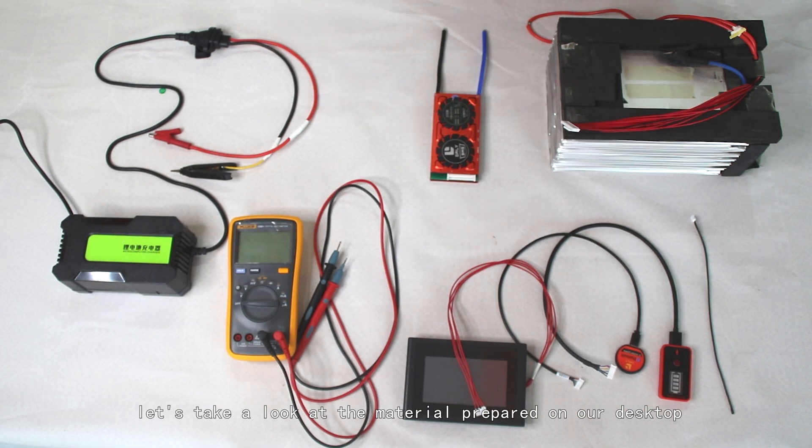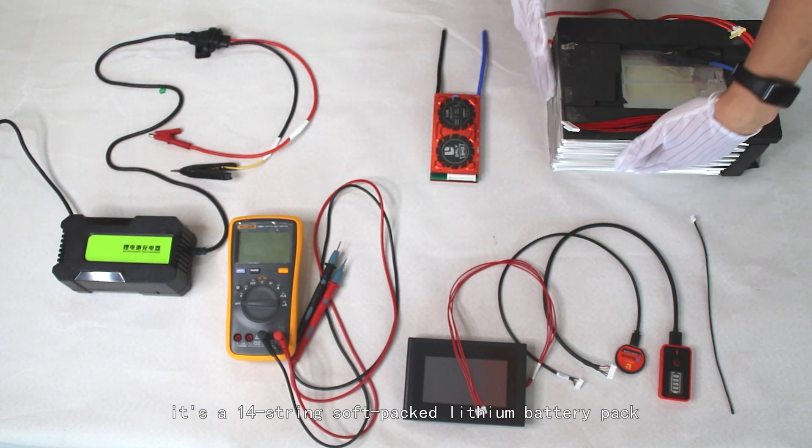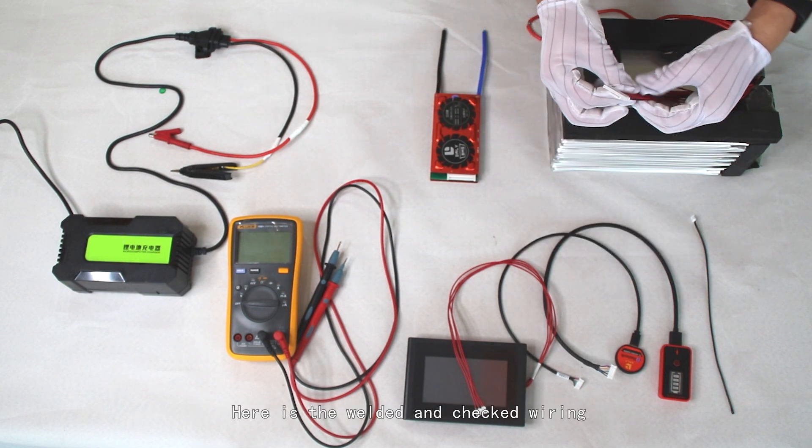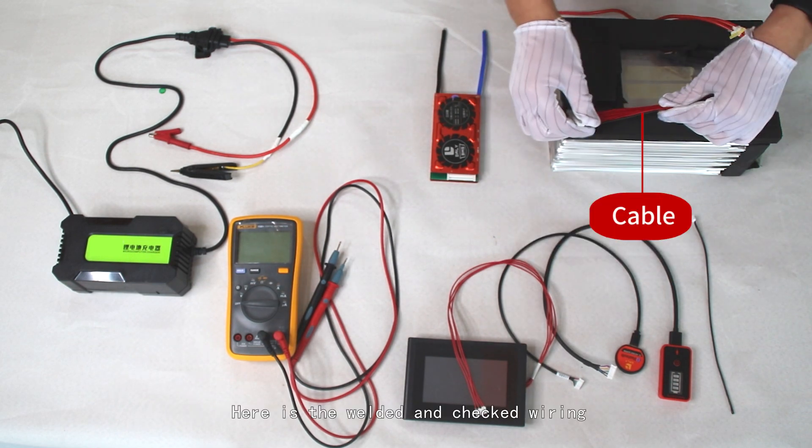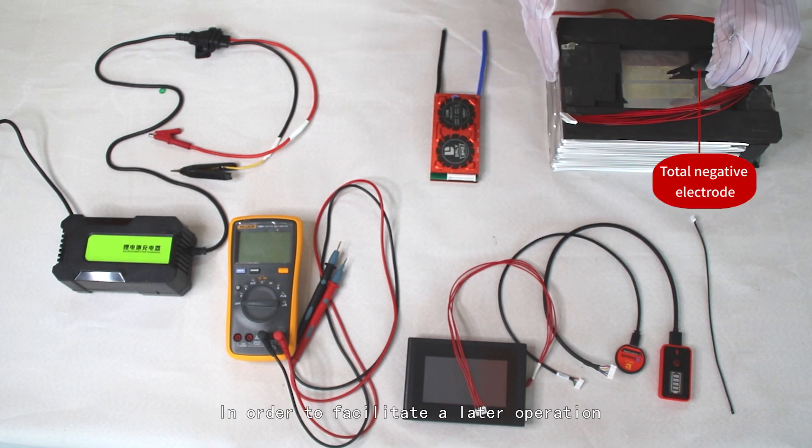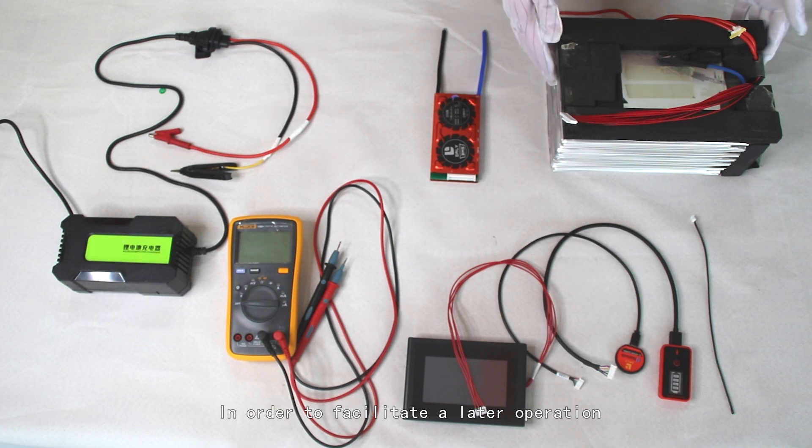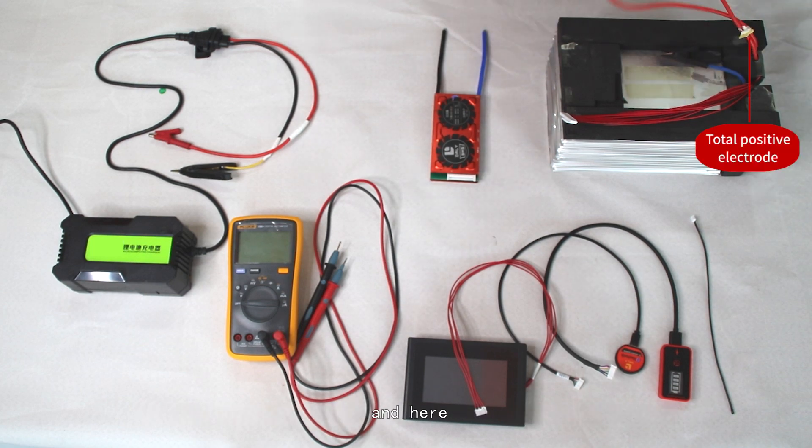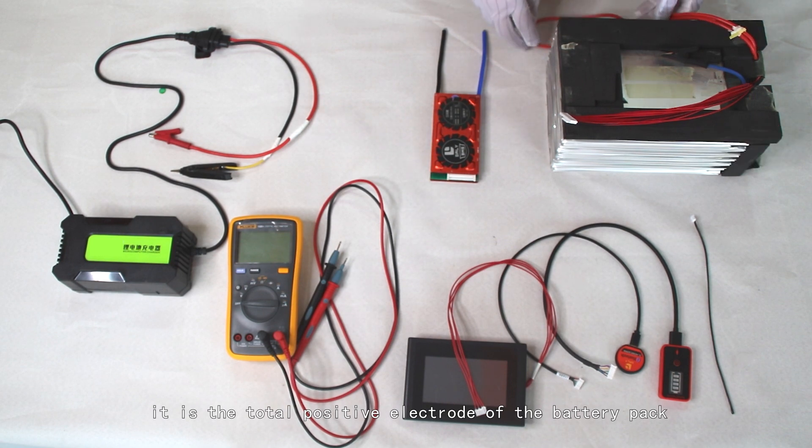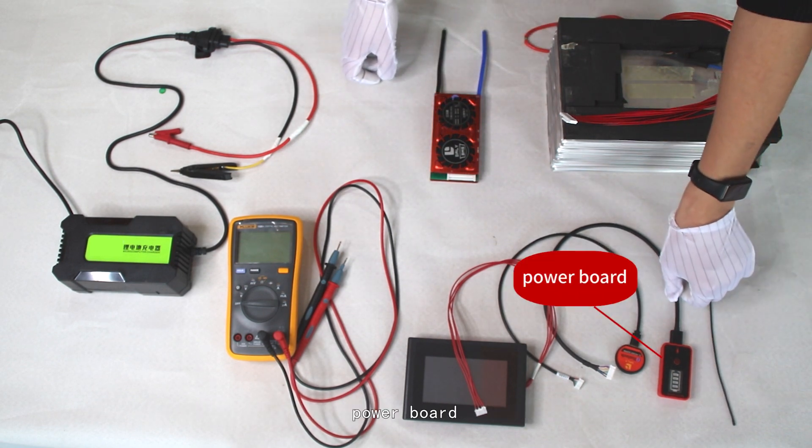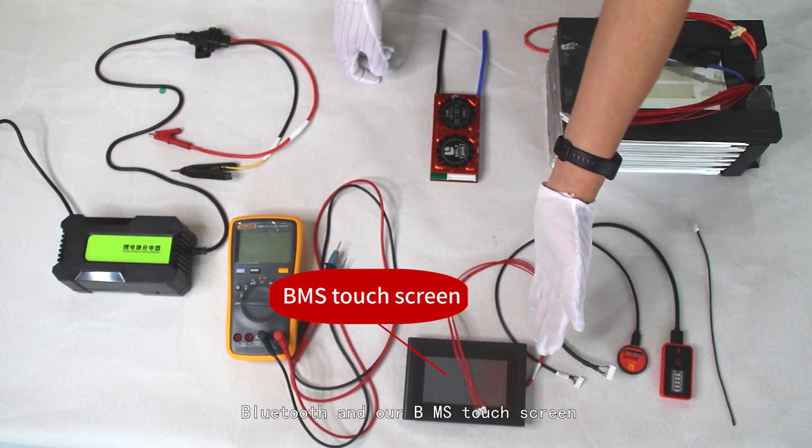First, let's take a look at the materials prepared on our desktop. Here is the 14-string soft-packed lithium battery pack with the welded unchecked wiring. This is the total electrode of the battery pack. To facilitate later operation, we have welded the total electrode to a pinch in advance.